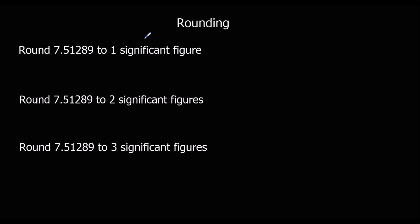Here's a question that says round 7.51289 to one significant figure. A significant figure is any number. It's not like a decimal place where we start counting after the decimal point. Here we're going to start counting from the first non-zero number. So the first number is not a zero, so we start counting right at the front. So the 7 — that's one significant figure, and that's what we want.